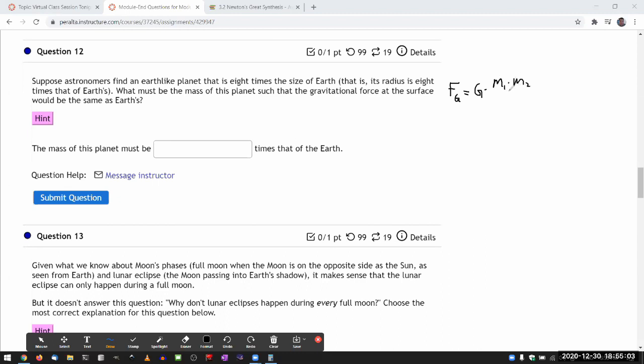Which is gravitational constant times the product of the mass of the two things divided by distance squared. That's the formula you should use. And this expression alone doesn't really tell you where to go from there.